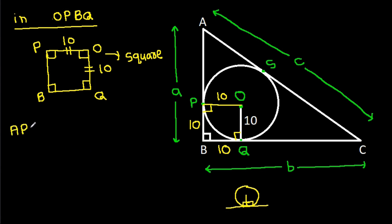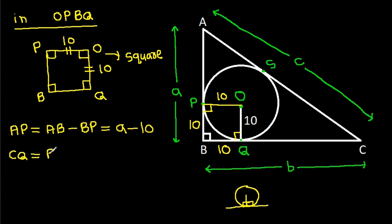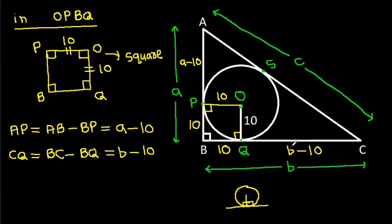And AP equals AB minus BP, and AB is A minus BP is 10, so AP equals A minus 10. And CQ equals BC minus BQ, and BC is B minus BQ is 10, so CQ equals B minus 10.